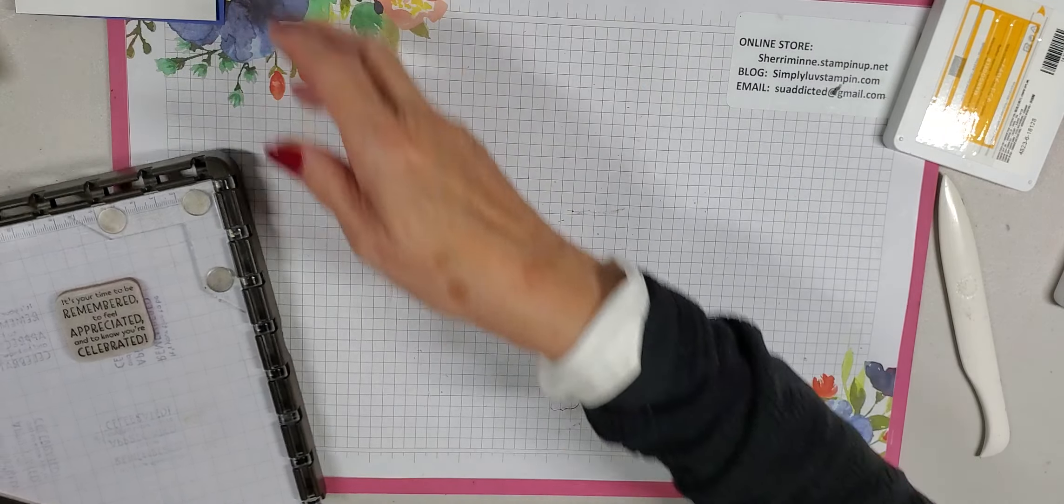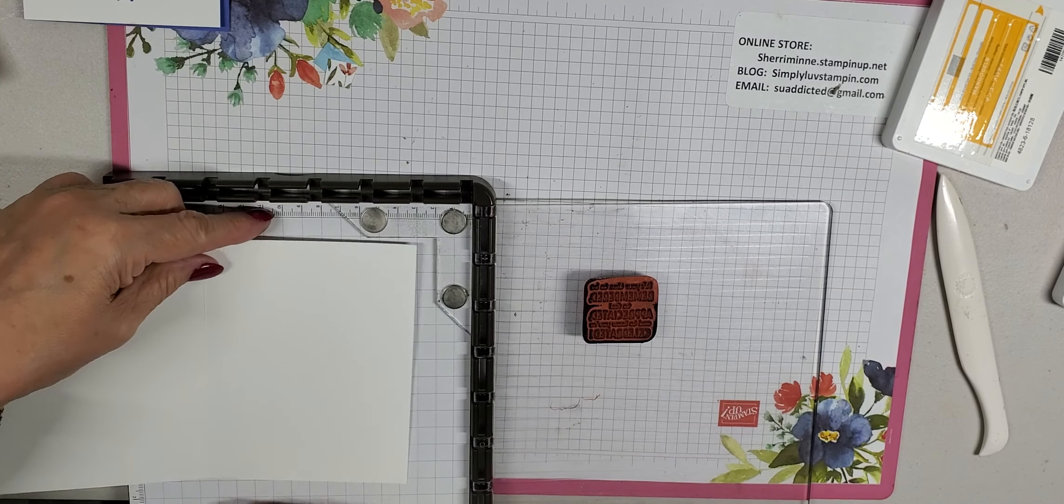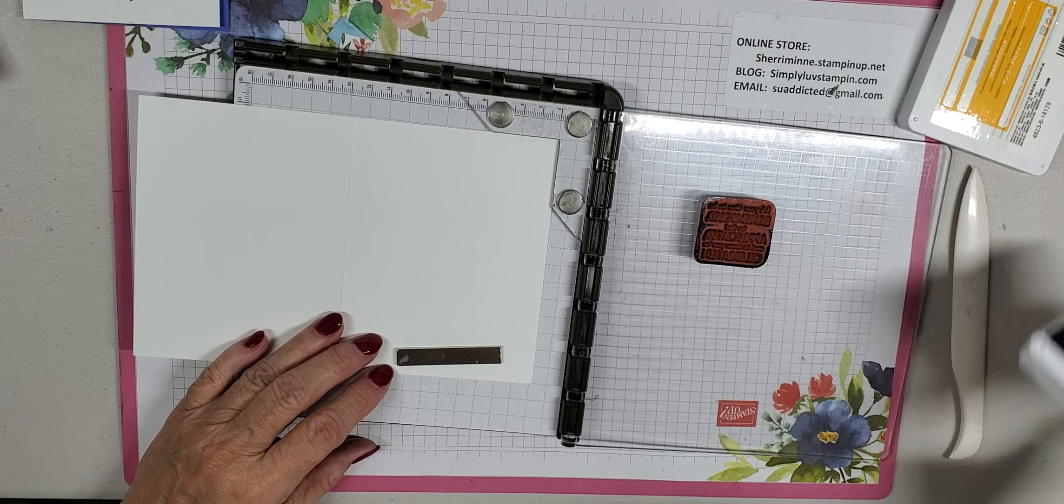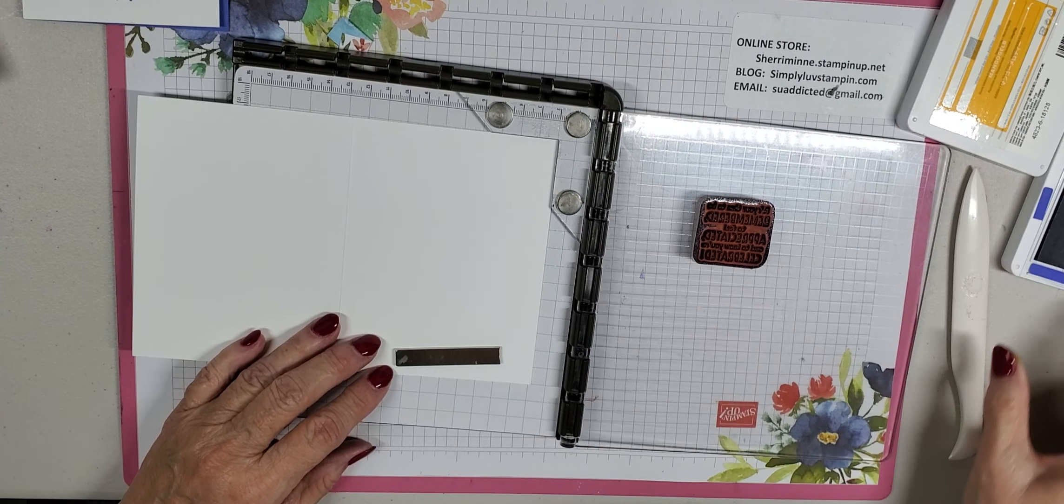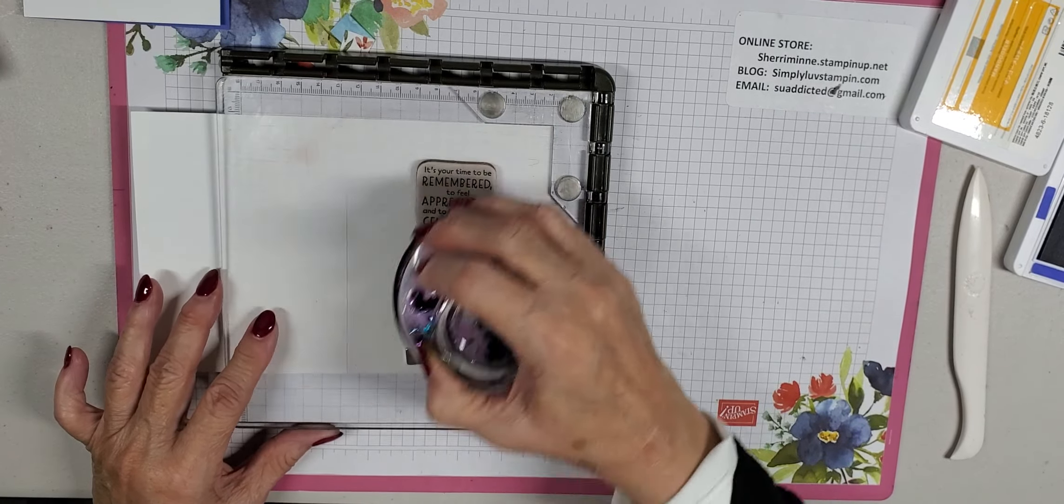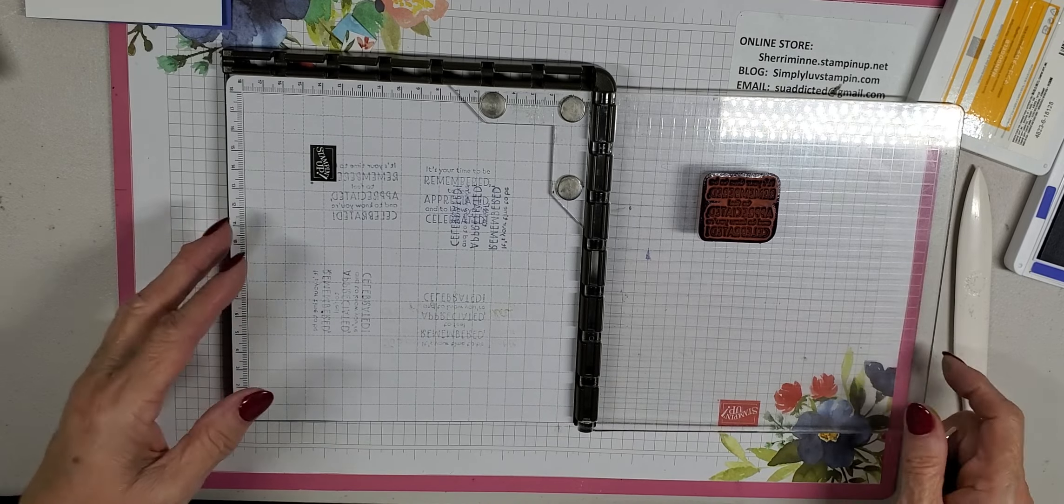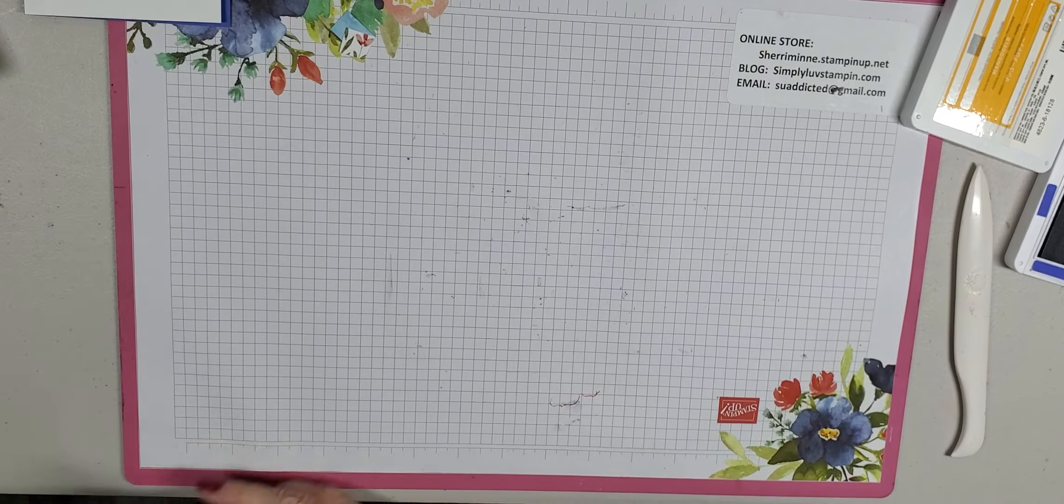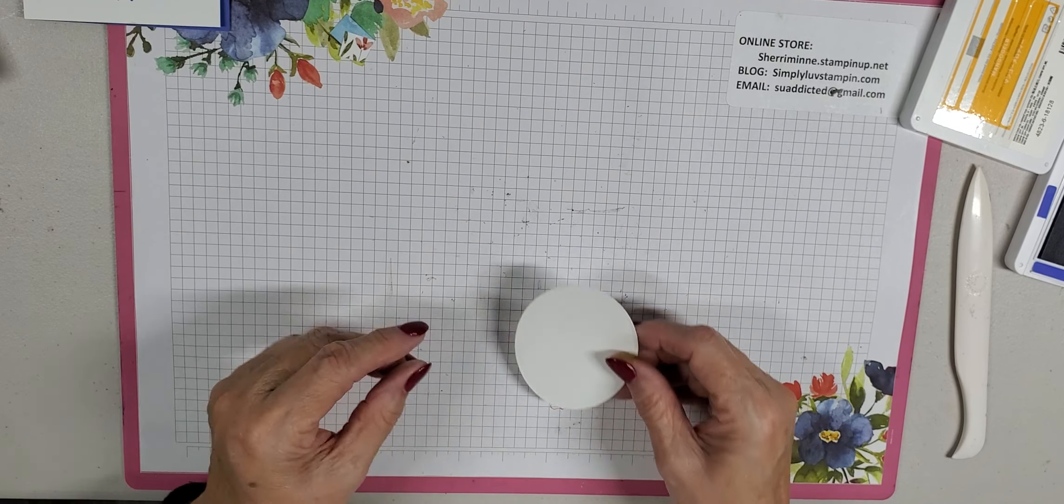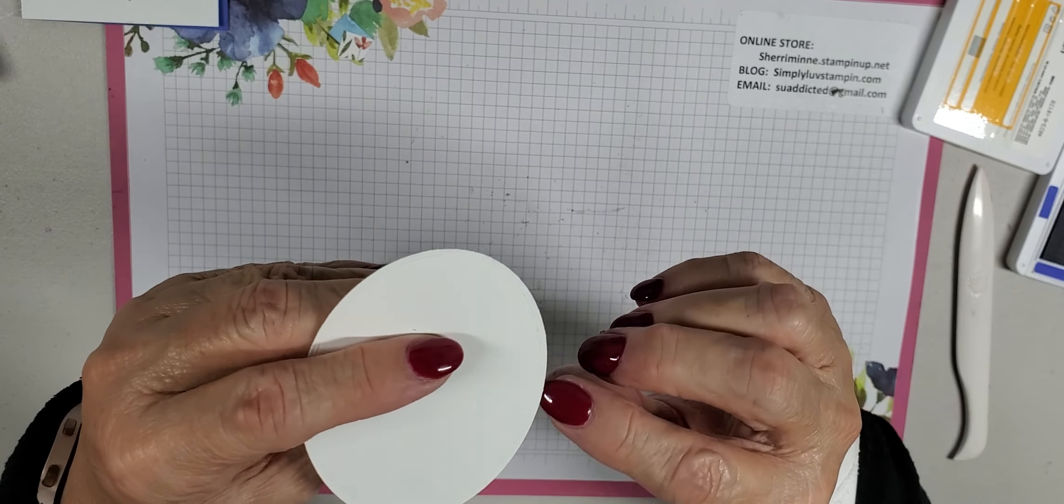So let's start over with the stamping since I kind of messed that up. But what I should have done is taken my Stamparatus, taken my card base, lined it up here, and stamp directly to my card base. Since it's white, I don't have to waste another piece of white card stock. That's what I was supposed to do. All right. This time we are done with this.